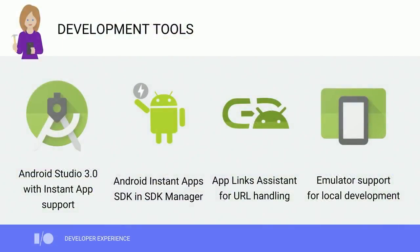Many of you develop apps in Android Studio. Android Studio 3.0 comes with Instant Apps support out of the box. You can install the Instant Apps SDK through SDK Manager, and then you can build, run, test, and debug in Synapse directly from the IDE. You can also easily add URL entry points with the App Links Assistant that's built directly in Android Studio. Apart from on-device support, we've also enabled emulator support for fast and easy local development.